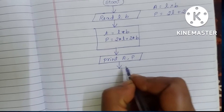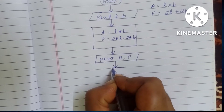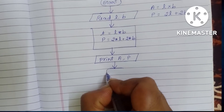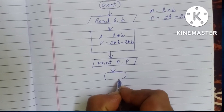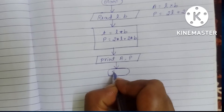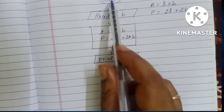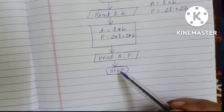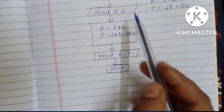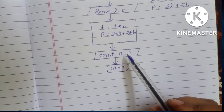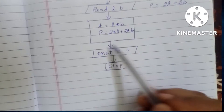The flowchart ends with a STOP statement, also written within an oval shape. To summarize the shapes: START and STOP are written within oval shapes, input and output are written within a parallelogram, and the process is indicated within a rectangle.